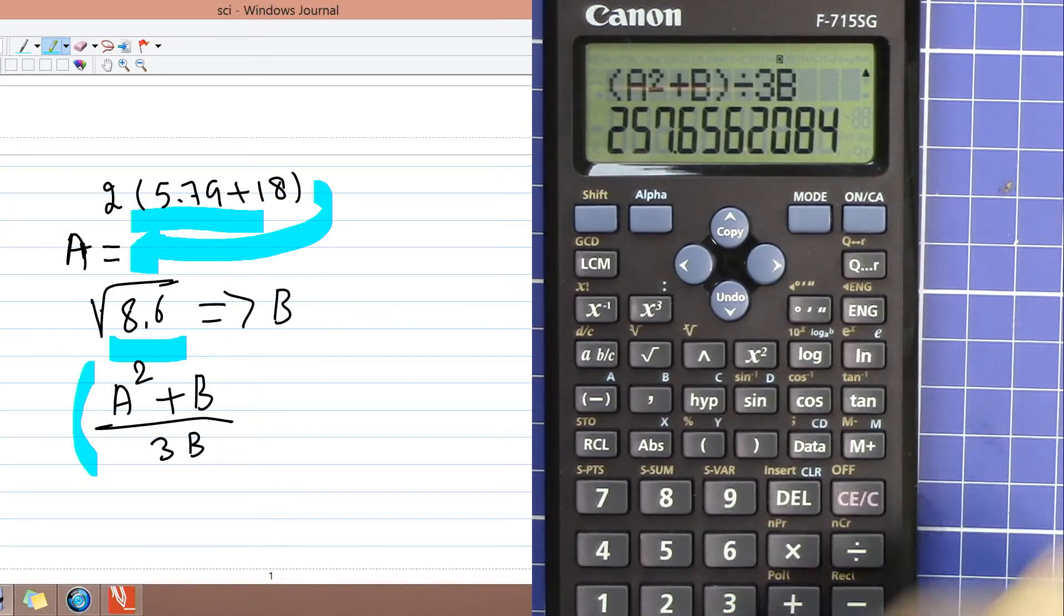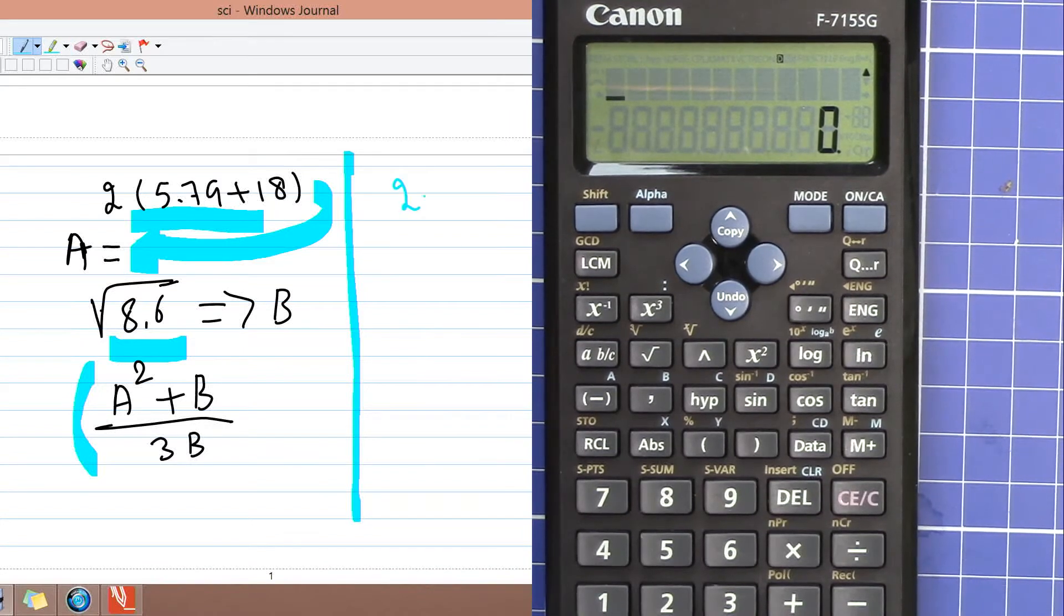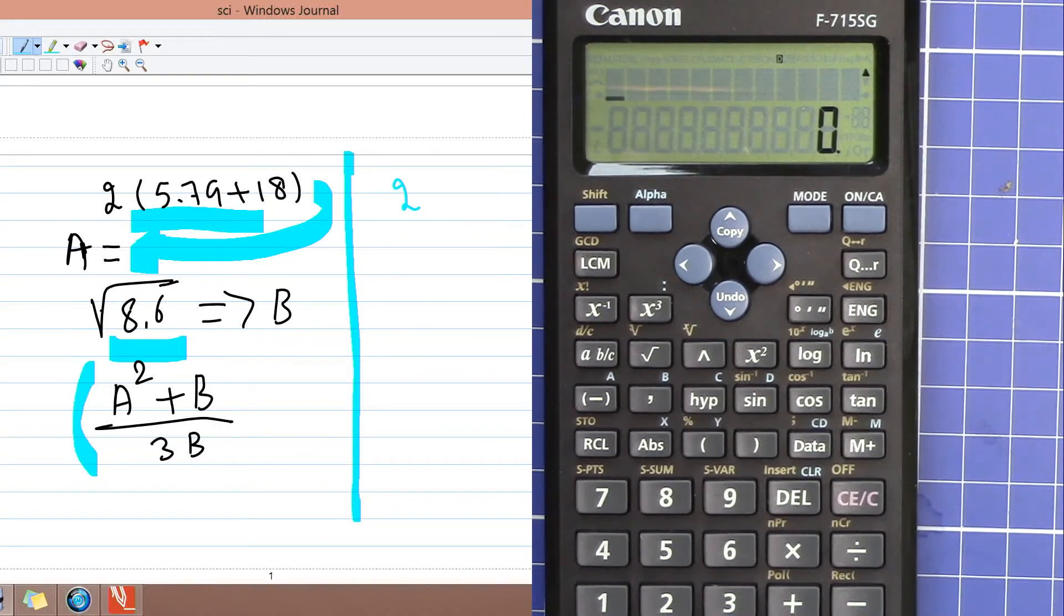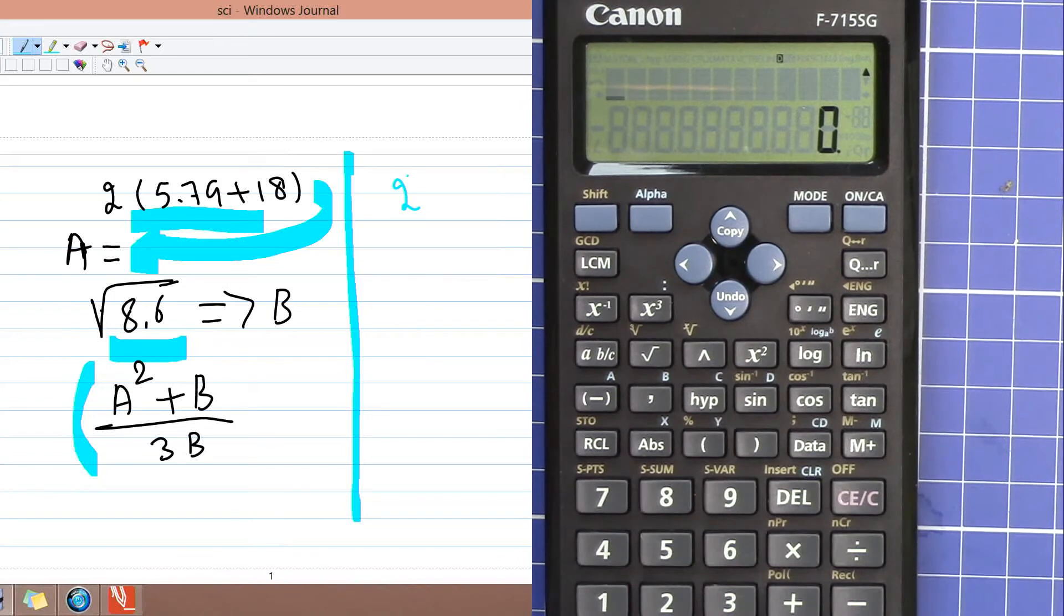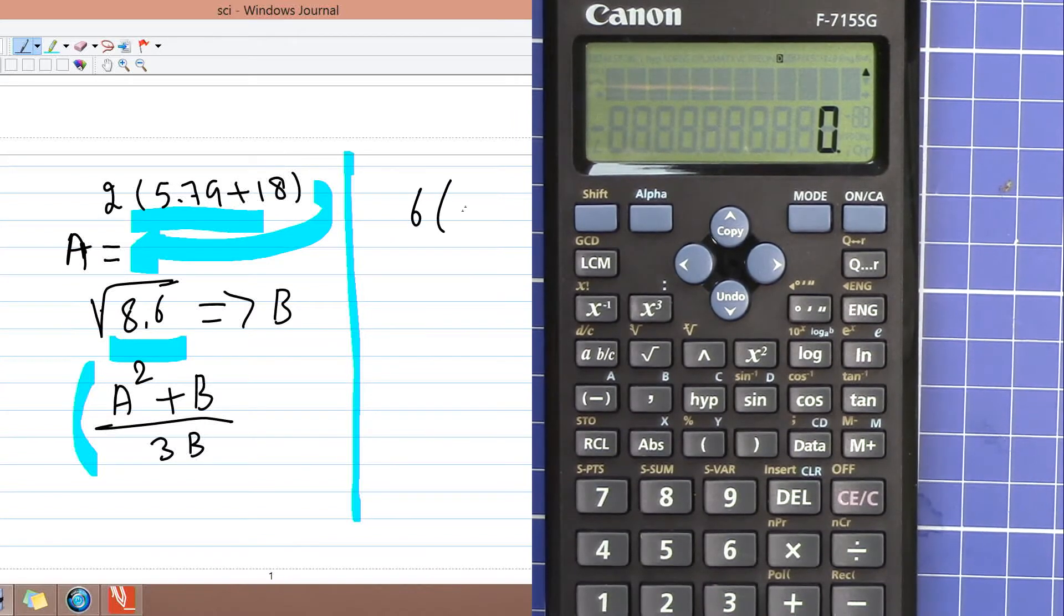This way you can use the memory. Also you can do other types of memory. Let's say you want to do 6 times pi over 3, and then you want to add 18, you want to have 7 added to that, and then you do some other calculation.